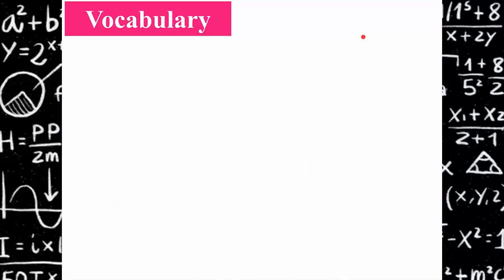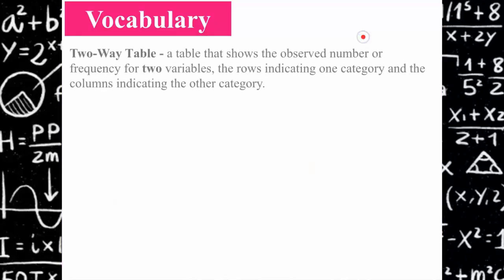Let's review some vocabulary. A two-way table is a table that shows the observed number or frequency for two variables. The rows in the table indicate one category and the columns indicate the other category.